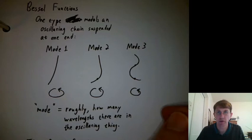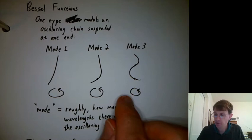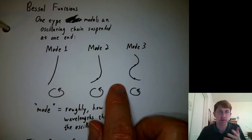I've mentioned Bessel functions in other videos. This is a chance to talk about them a little more thoroughly. So one type of Bessel function models an oscillating chain suspended at the top end, just kind of swinging freely under gravity. And it's not that that's the most important application in the world, but this is the one that's easiest to demonstrate in a Calc class. So that's what we do.